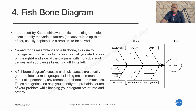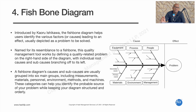The fourth tool is the fishbone diagram, introduced by Kaoru Ishikawa himself. This diagram helps identify various factors leading to an effect or problem. It looks like a fishbone — the head of the fish represents the problem, and there are different branches such as people, process, equipment, materials, environment, and management. In each branch, you can also create sub-branches for next-level issues. For example, under 'people,' a sub-branch could be 'lack of training.'